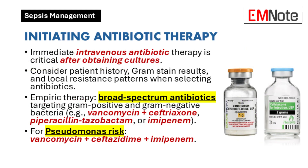Immediate initiation of intravenous antibiotic therapy is essential after obtaining appropriate cultures. When selecting antibiotics, consider the patient's medical history, gram stain results, and local resistance patterns. Empiric therapy should include broad-spectrum antibiotics targeting both gram-positive and gram-negative bacteria. A common regimen includes vancomycin combined with either ceftriaxone, piperacillin-tazobactam, or imipenem. If there is a risk of Pseudomonas infection, consider using vancomycin in conjunction with ceftazidime and imipenem.